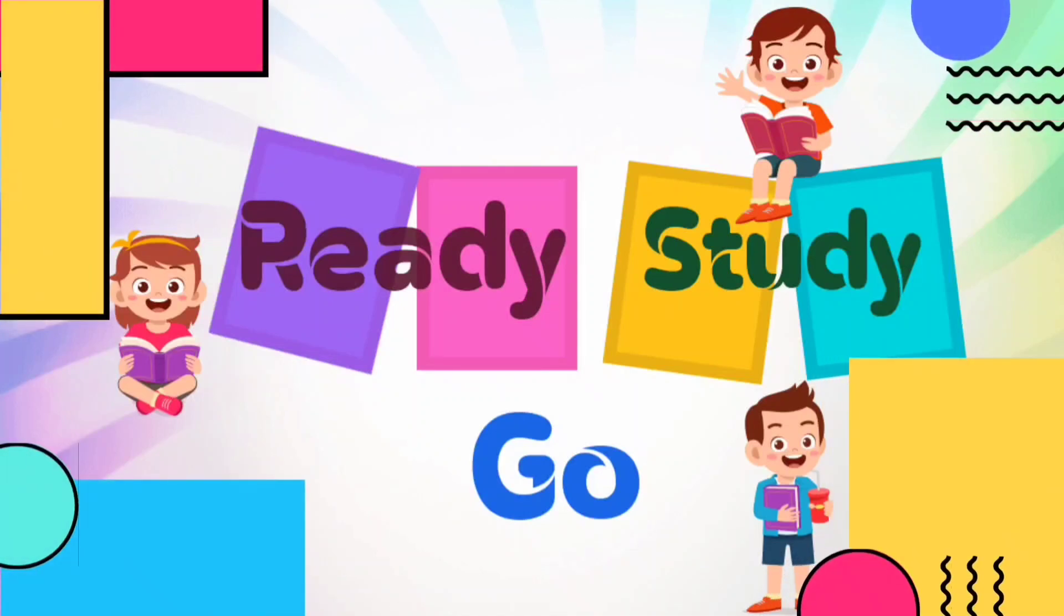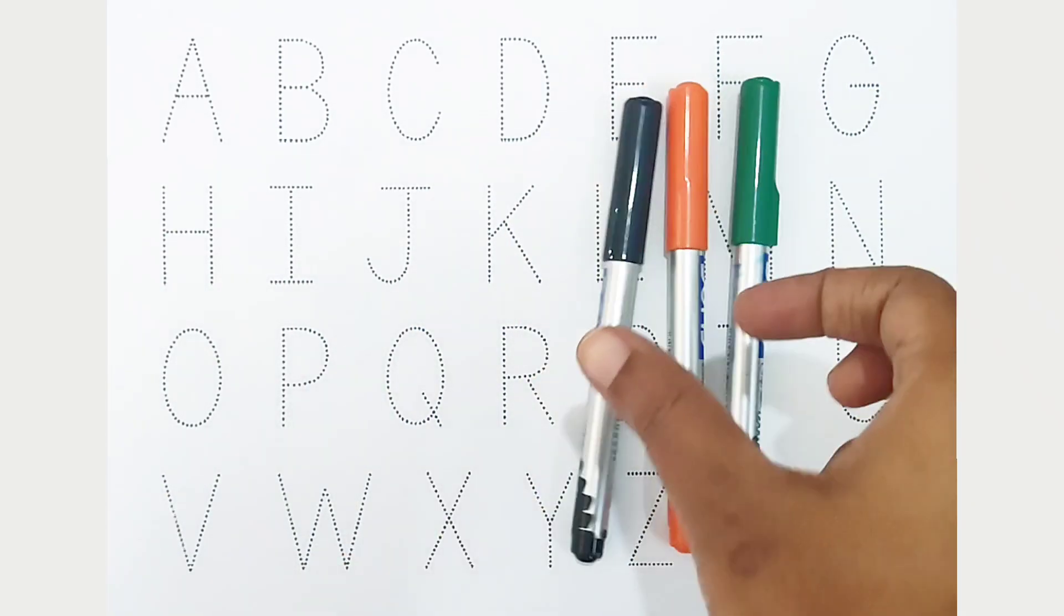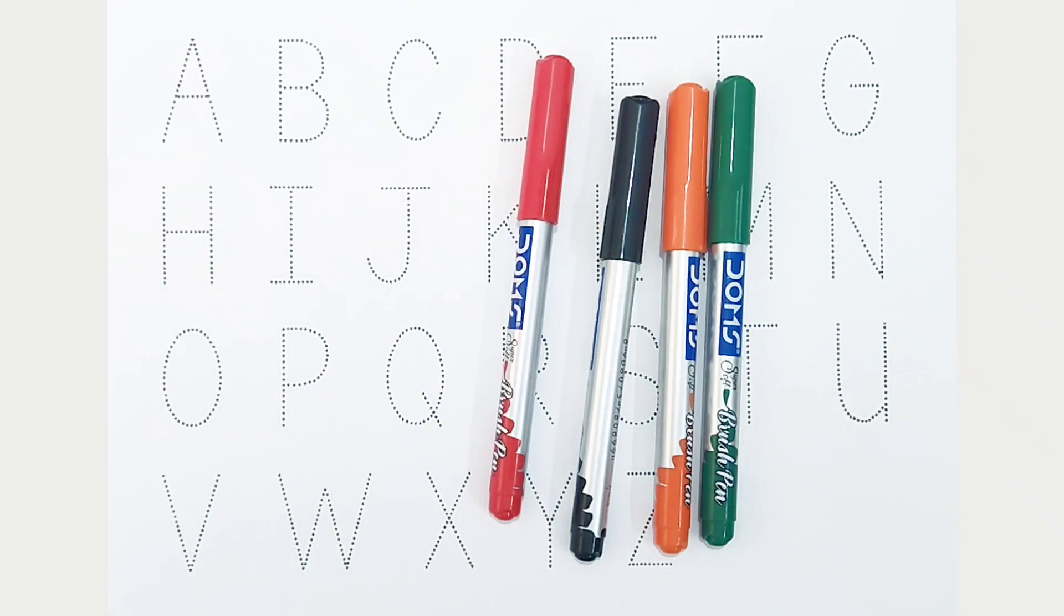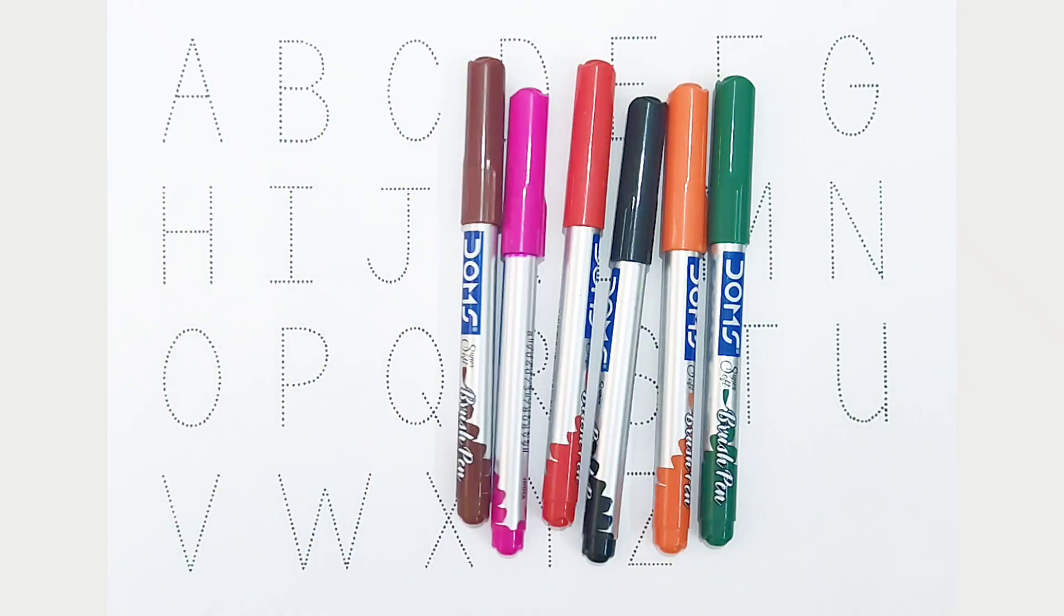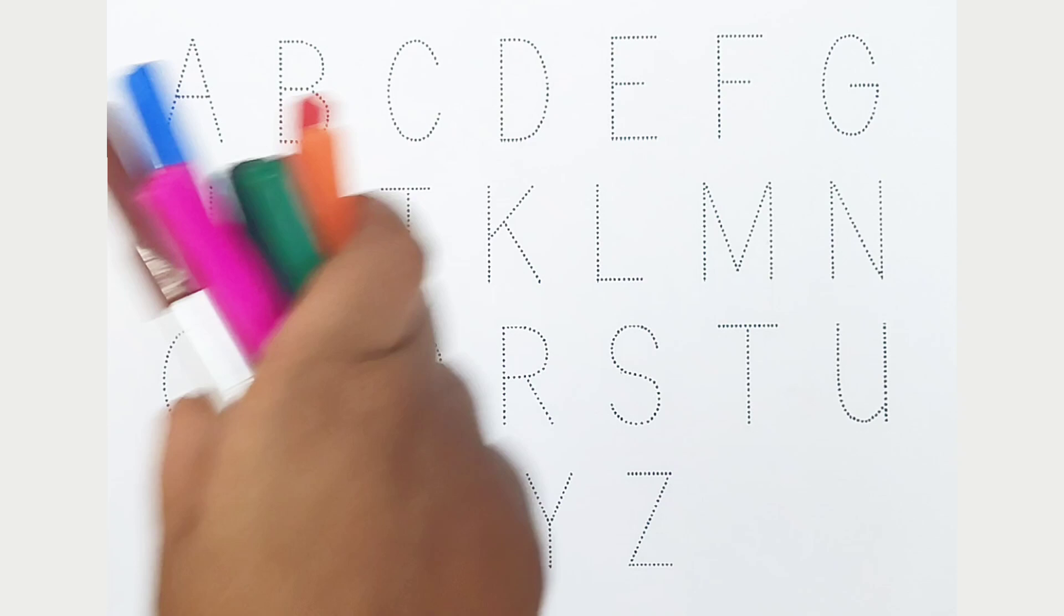Ready, steady, go! Green color, orange color, black color, red color, pink color, brown color, blue color. Hi kids, today we can learn the alphabets from A to Z.